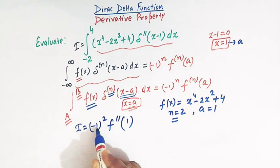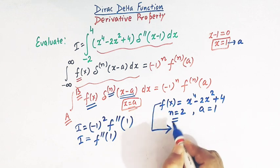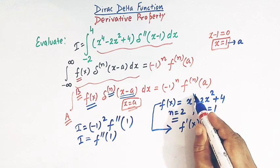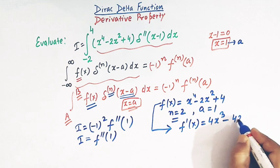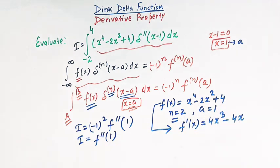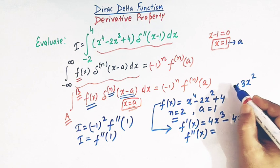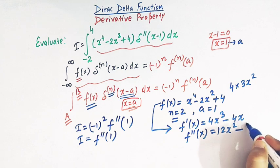Since minus 1 squared is positive 1, we have simply I equals f double prime evaluated at x equal to 1. Let us find the derivatives of f(x). The first derivative is: the derivative of x to the 4 is 4x cubed, and the derivative of 2x squared is 4x, and the derivative of the constant 4 is 0. For the second derivative: the derivative of x cubed is 3x squared, so multiplying by 4 gives 12x squared, and the derivative of x is 1, so we have minus 4.